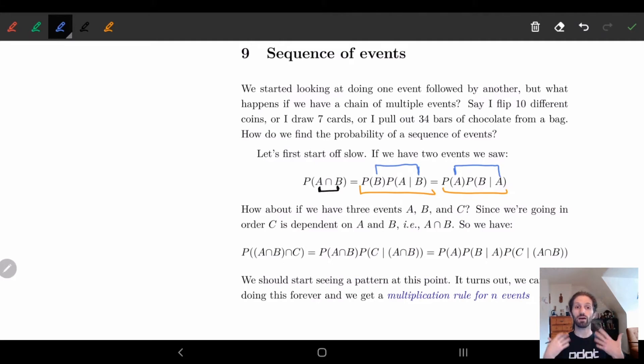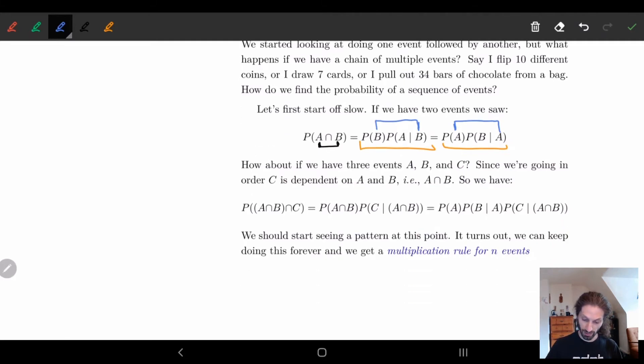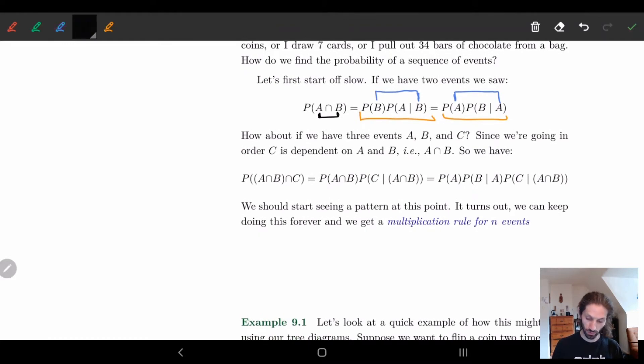How about if we have a third event? So let's add an event C, and let's see what happens when we do A and B and C. So we have A and B and C. Now I just added these brackets here to make life a little easier. We're going to look at the second way of looking at things here.